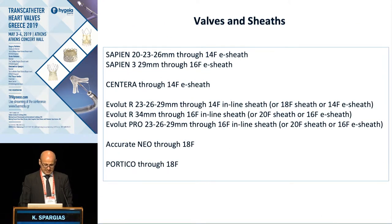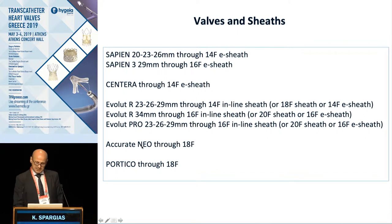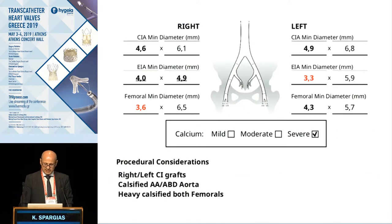Here is a breakdown of valves and sheaths: the SAPIEN 3 valve uses 14 French for smaller sizes and 16 French for the 29 mm size; the Centera also comes in at 14 French; the Evolut valves use the inline sheath or alternatively an 18 French sheath — all 14 French equivalent depending on size; the Accurate NEO requires an 18 French sheath like the Portico valve, and the largest Portico needs 19 French unless used sheathless at 18 French outer diameter.